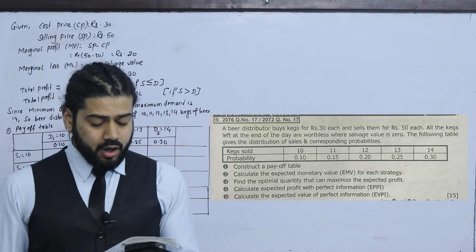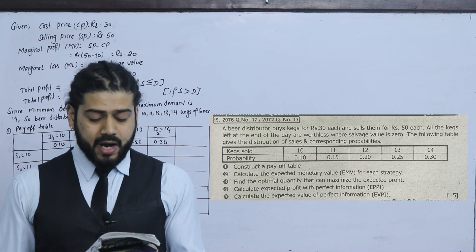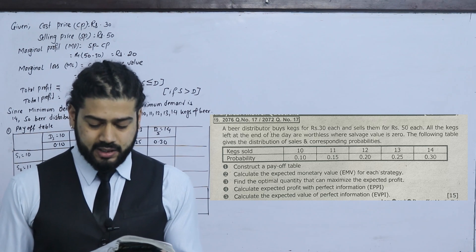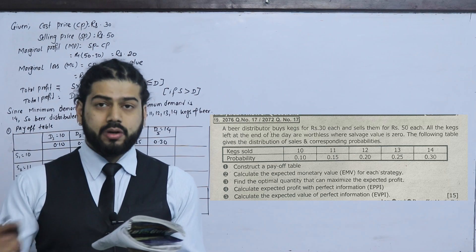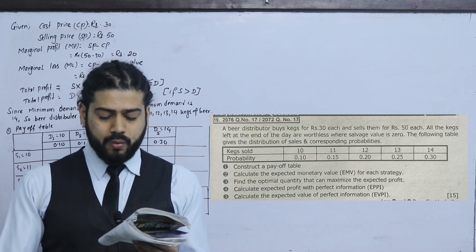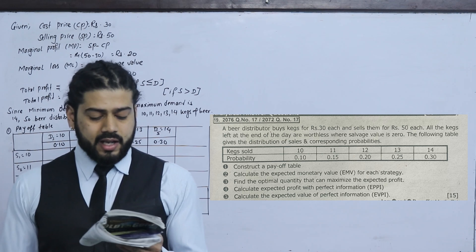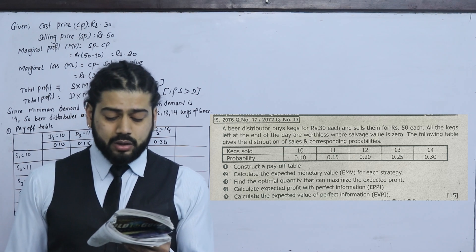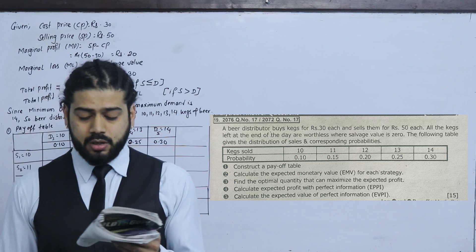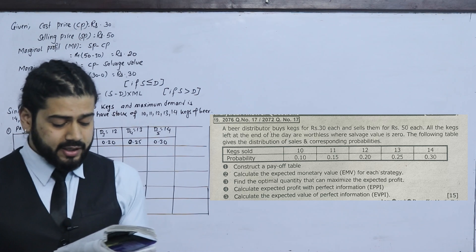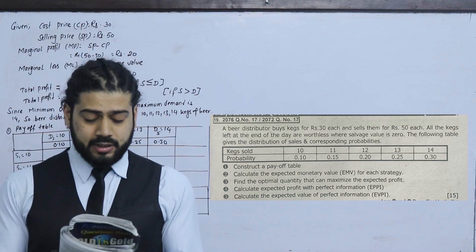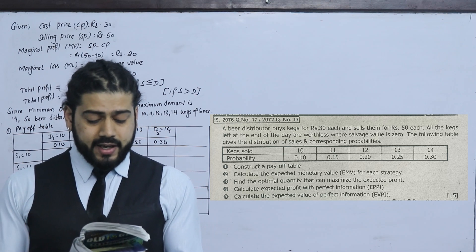This is the question. A beer distributor buys a case for Rs.30 each and sells them for Rs.50 each. The marginal profit is 50 minus 30, which is 20. All cases left at the end of the day are worthless. The following table gives the distribution of the sales and corresponding probability. We have 10 cases sold.